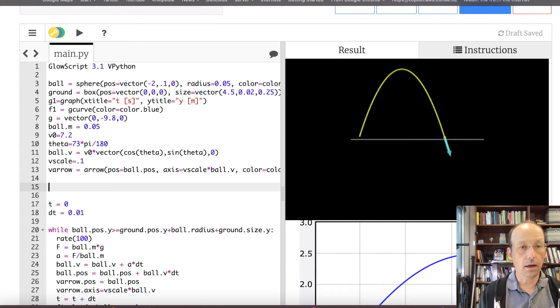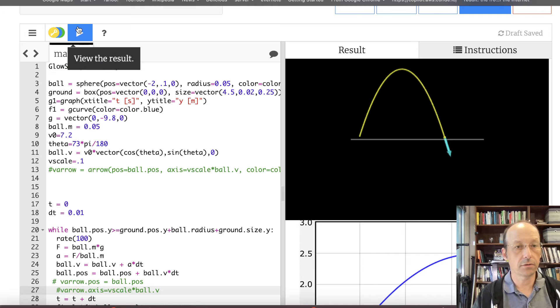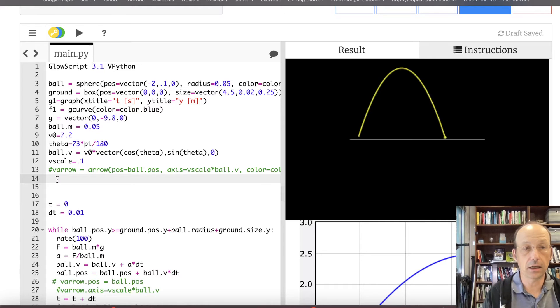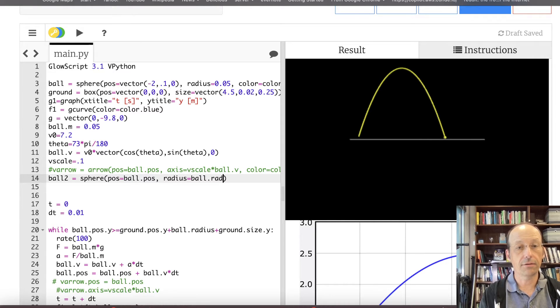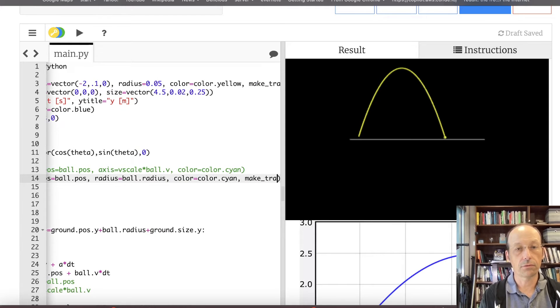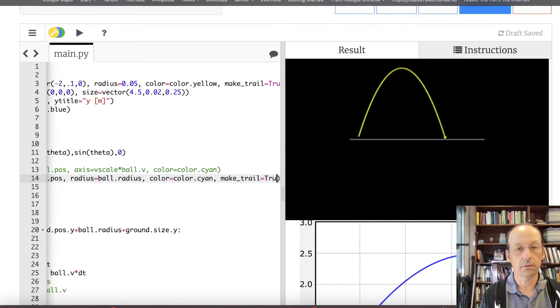Now I'm going to make another ball. I don't really even care about this arrow. Let's turn off the arrow and run it. Make sure it's doing okay. Now let's make a second ball, cyan colored. So ball2 is sphere, position equals ball dot pos, same position. The radius is the same, equals ball dot radius. I have one called ball and one called ball2. And then color equals color dot cyan, make trail equals true.